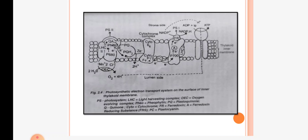The photosynthetic electron transport system consists of a light harvesting complex, oxygen evolving complex, pheophytin, plastoquinone, quinone, cytochrome, ferredoxin, ferredoxin-reducing substance, and plastocyanin. The photosynthetic ETS system is present in the stroma site and in the lumen site on the thylakoid inner membrane. It shows photosystem 1, photosystem 2, and the cytochrome complex. The light harvesting complex is an important structure for photolysis of water.